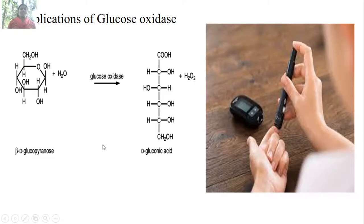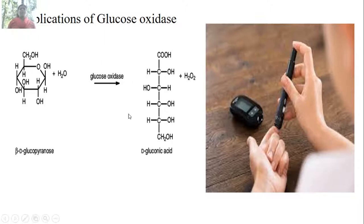The first application is glucose oxidase. Glucose oxidase is applied for the detection of glucose in biological samples, where glucose oxidase catalyzes the conversion of glucose into gluconic acid.